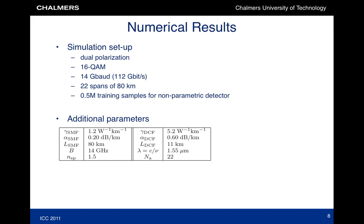We are now ready to show some performance results. We will consider a system with dual-polarization 16QAM and 22 spans of fiber. The overall bit rate is set to 112 gigabit per second, corresponding to the 100 gigabit Ethernet emerging standard.